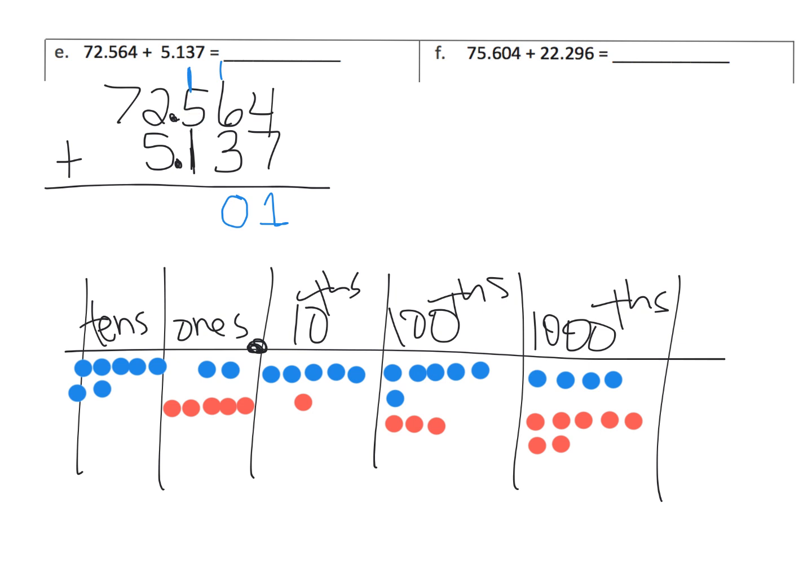Then we have 1 tenths plus 5 tenths plus 1 tenths. We've got 7. Nothing to carry over. And here's our decimal place. And then we've got 2 ones and 5 ones. So we've got 7. Sometimes we call them units. So we've got 7 units. And then in our tens place, we have 7 tens and no tens. So we have 7 tens total. So our answer is 77.701.